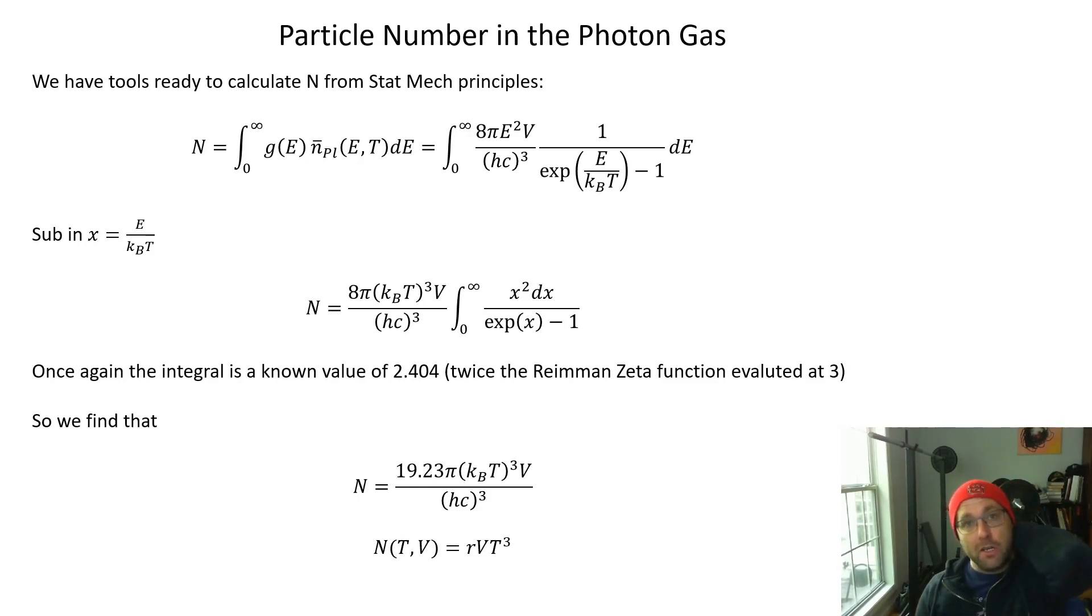Let's see how this works. We can actually calculate N already starting from our statistical mechanics principles. This idea should be familiar: to calculate the total number of particles using quantum statistical mechanics, we're going to sum up the number of particles in a level of energy E multiplied by the density of levels at that energy E. How many levels are there and are they occupied given the temperature T?